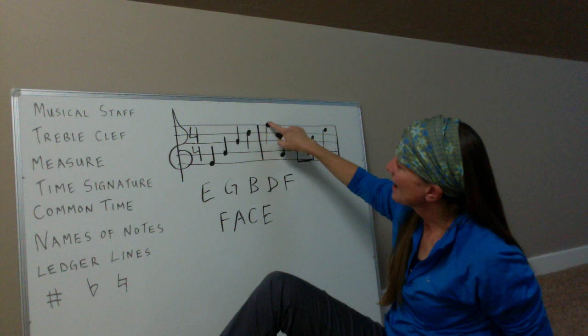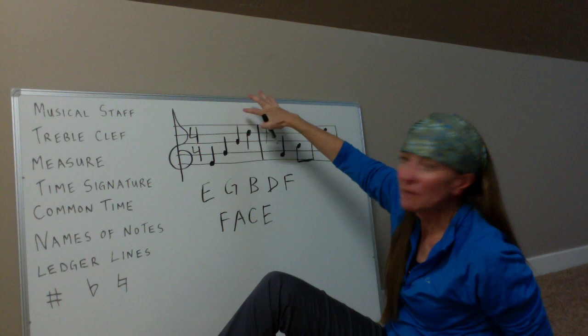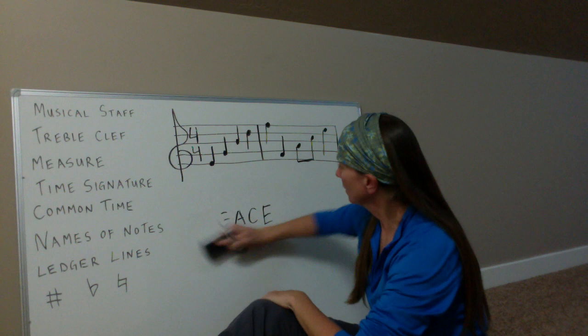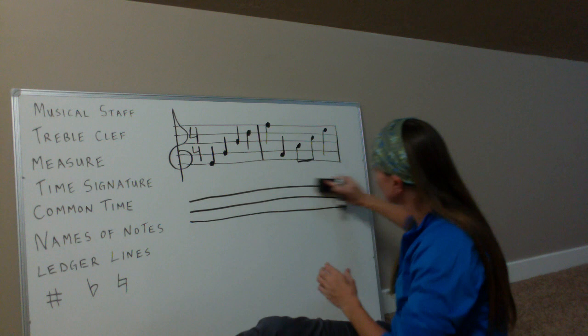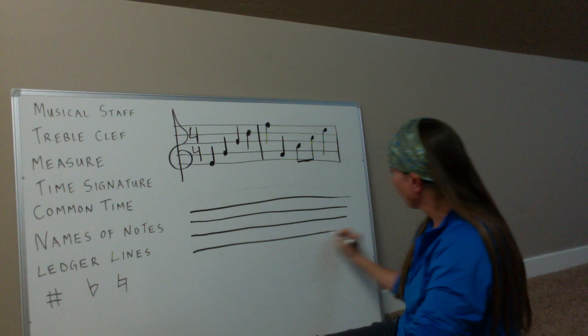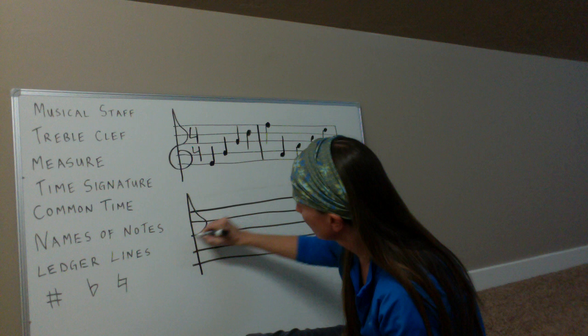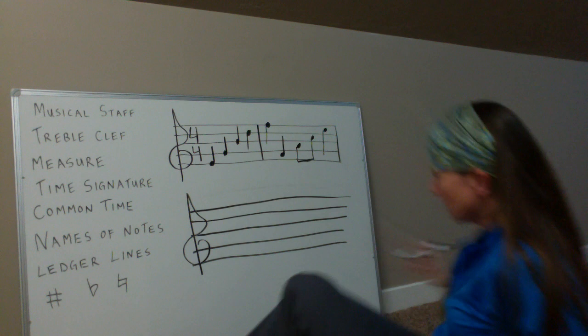There are also notes below the staff and above the staff. These are called ledger lines. I'm going to draw a musical staff again with five lines, the treble clef wrapping around the G line, and four-four for the time signature.